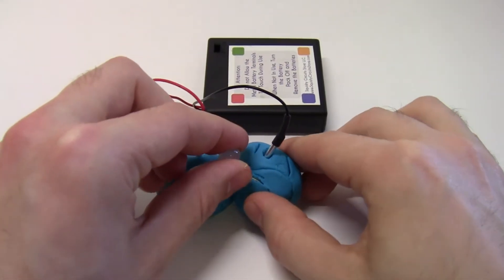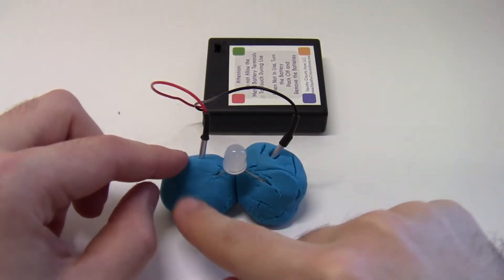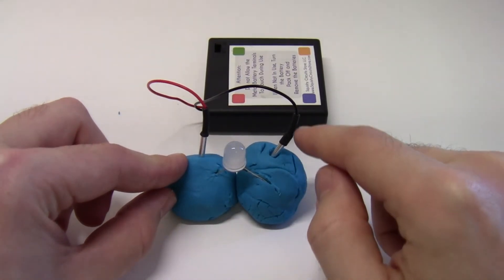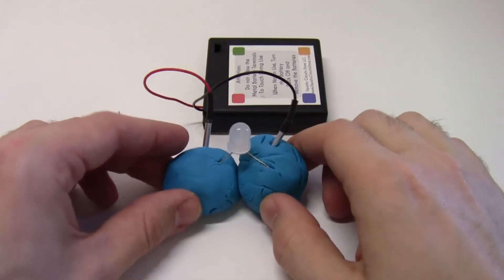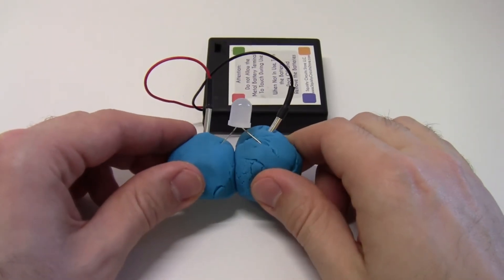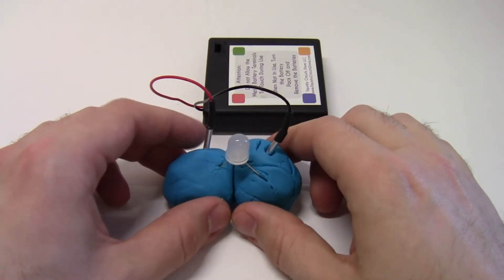This occurs in a short circuit because electricity likes to take the path of least resistance. You can kind of think of it like how water flows. It turns out that it's actually easier for the electricity to flow through the wires and then directly through the Play-Doh if it can find a path that only goes through the Play-Doh and it's harder for it to go through the LED.